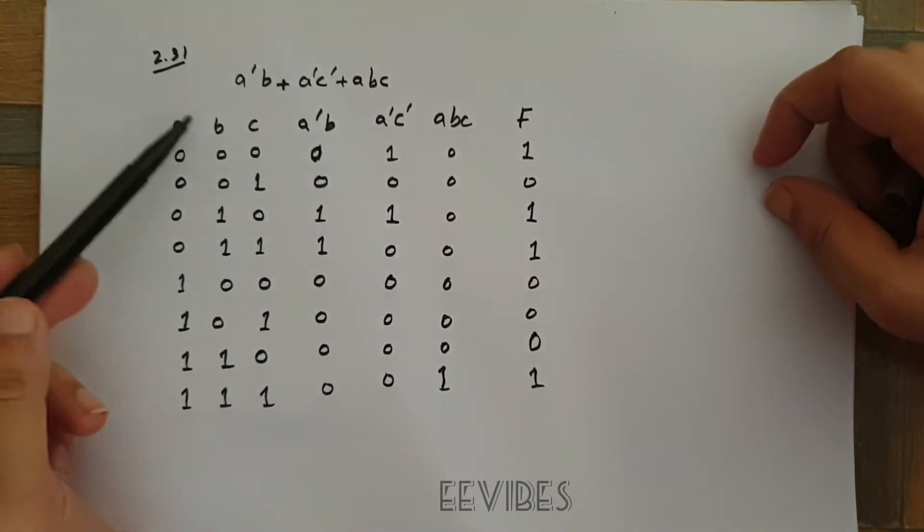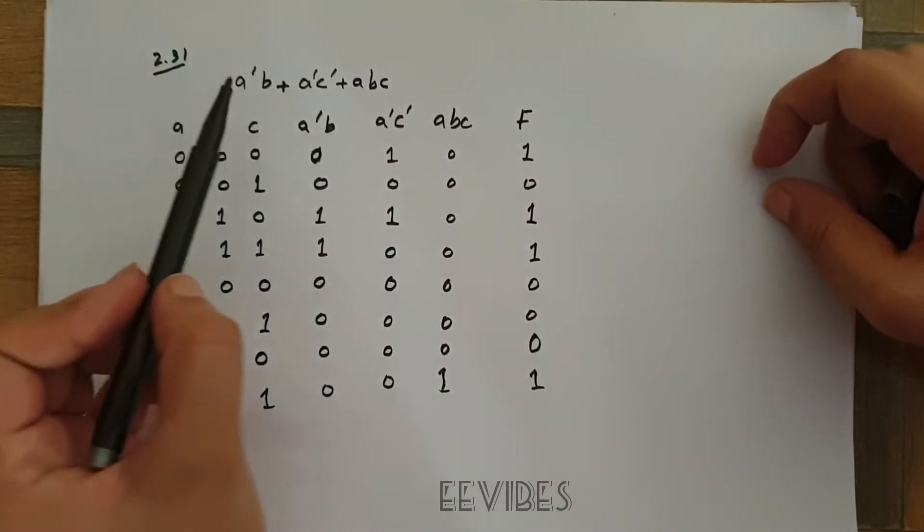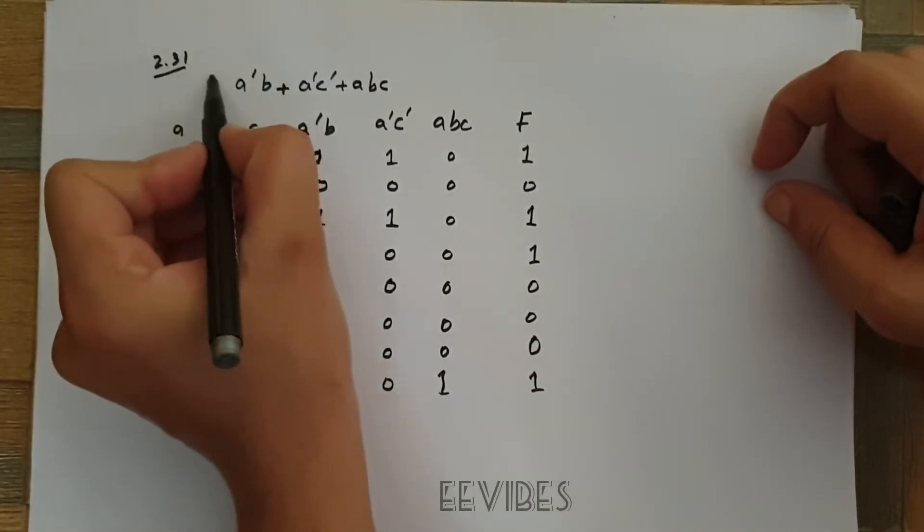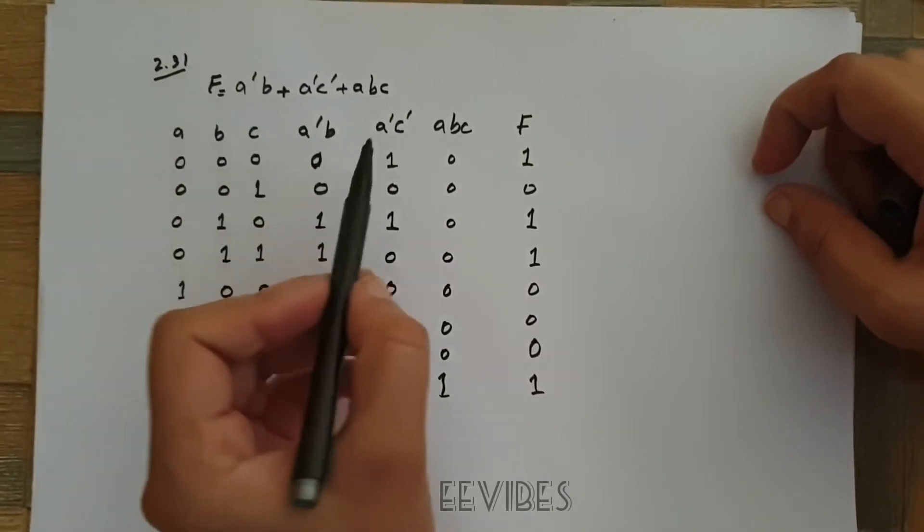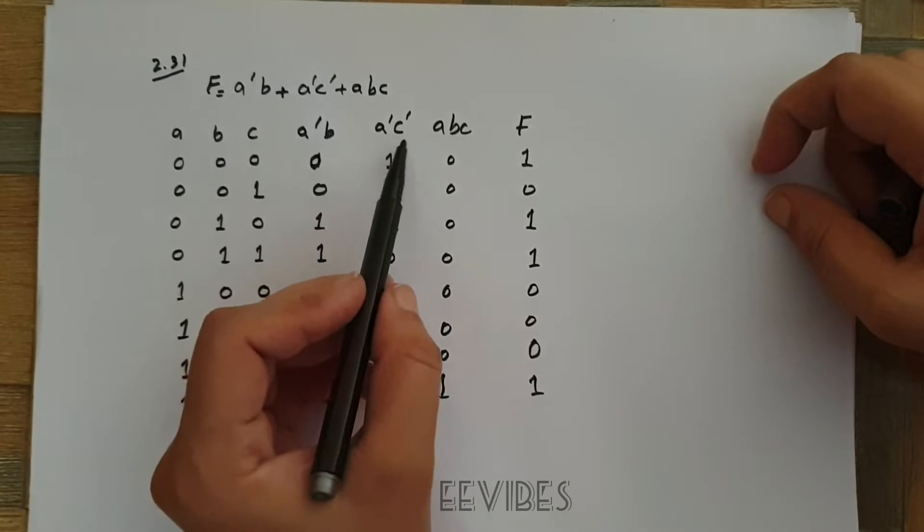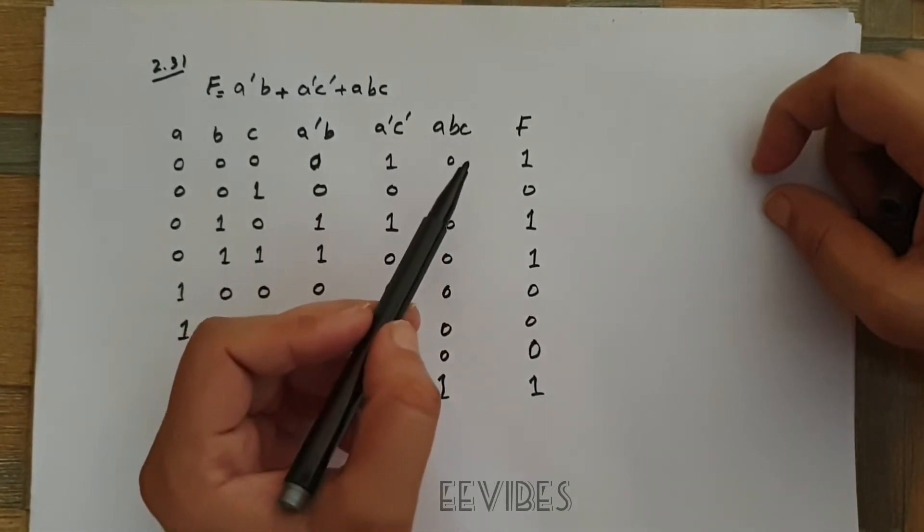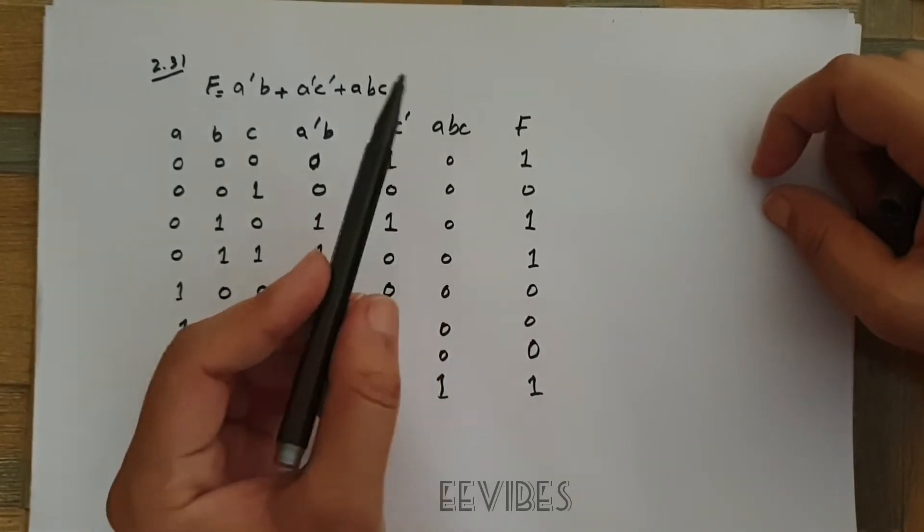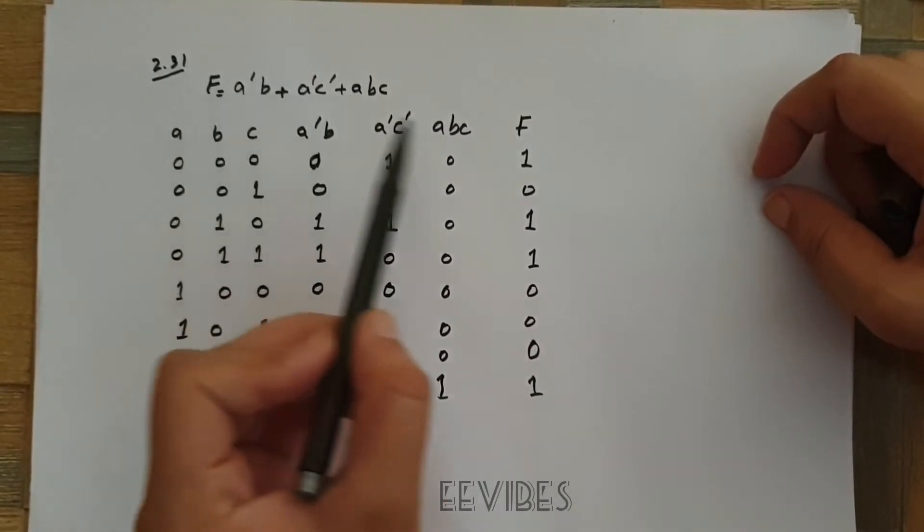Then I evaluated this function. First of all I evaluated a complement b, then a complement c complement, and finally I evaluated abc. And hence you can get the original function is obtained by ORing these three terms.